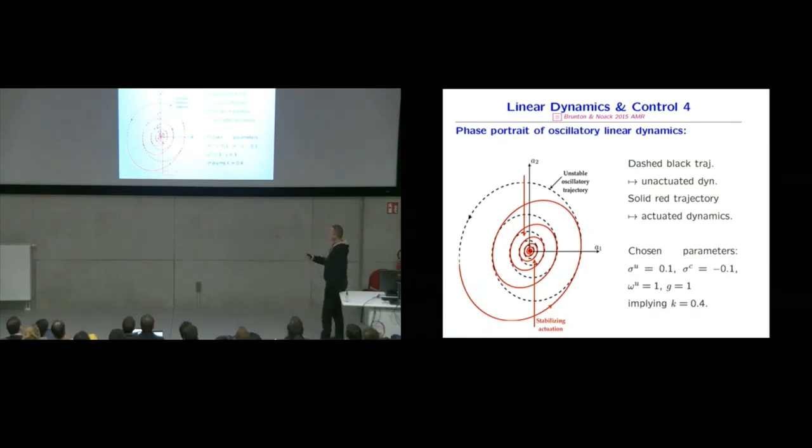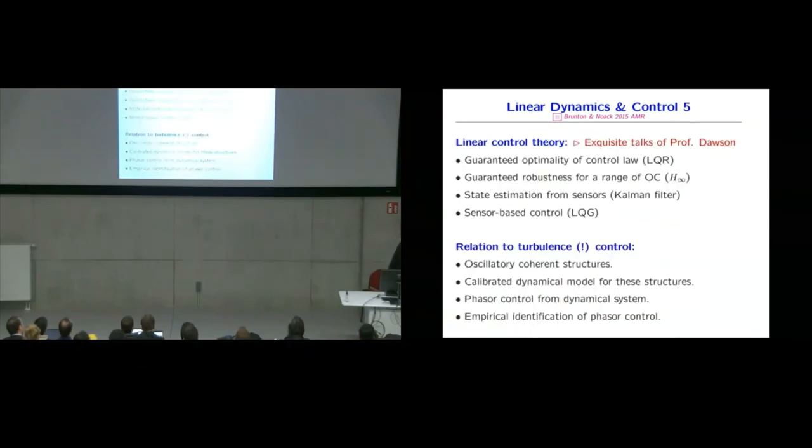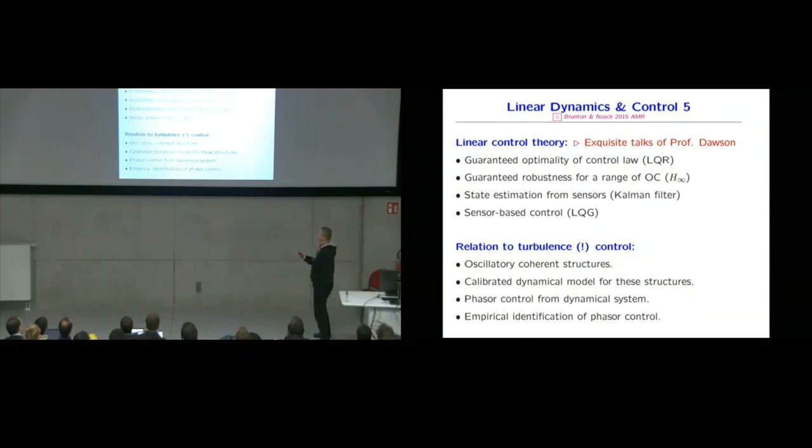And you see it's a bit elliptic. Why is it elliptic? Because essentially, you can only act in this direction. So when you are here, you have a strong gain. So you can significantly reduce the amplitude. If you are here, you can do nothing because your control has to be 0. So now we have a perfect understanding of linear control and a very simple method of doing so. Why is this of relevance for turbulence? Well, so this is linear control theory.